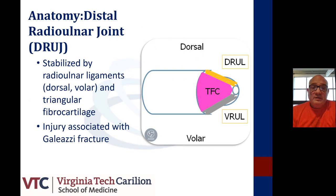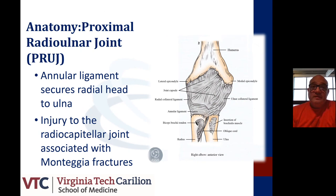The first component of the forearm joint is the distal radioulnar joint. It's stabilized by the dorsal and volar radioulnar ligaments in the TFCC complex. When we see injuries to the distal radioulnar joint and associated radial shaft fractures, this is known as a Galeazzi fracture, which we'll mention further. The anatomy of the proximal radioulnar joint is important to note: the annular ligament secures the radial head to the ulna. When you have injury to the radiocapitellar joint, it's associated with what we call Monteggia-type fractures.